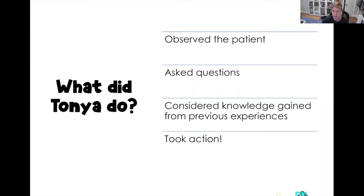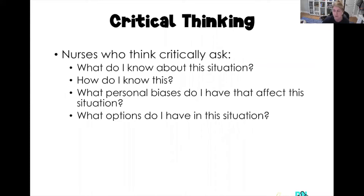Tanya considers the information she observed and learned from the patient to determine that he is in pain and has reduced his mobility because of this pain. She decides to administer an analgesic to relieve his pain, so she can then turn him more frequently and begin to get him out of bed, which is very foundational to his recovery from surgery. She first observed the patient, asked questions, considered her previous knowledge based on past experiences with surgical patients, and then took action — walking through the nursing process.